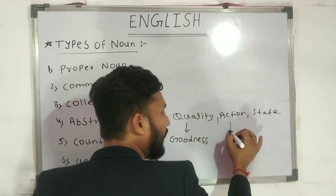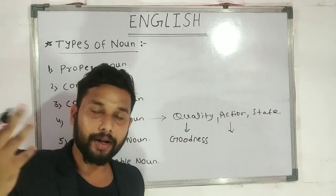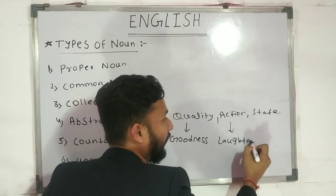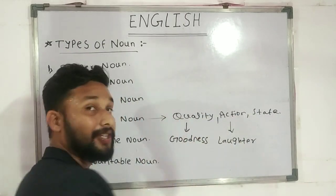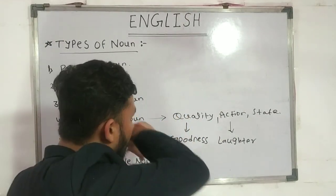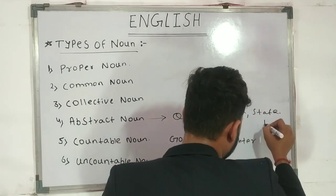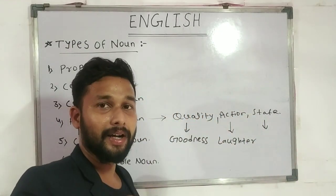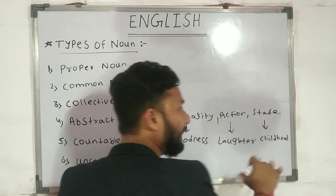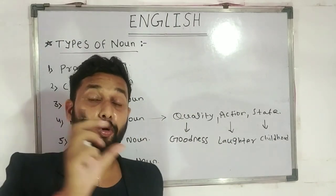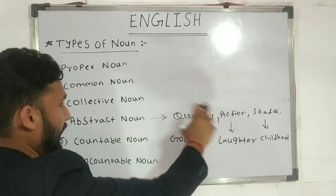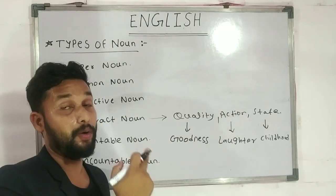We can also talk about state as an abstract noun. For example, 'childhood' — childhood is the state of being a child. So childhood is a noun that relates to a state. It is a child's state. So childhood is an abstract noun type. Abstract nouns represent quality, action, or state — things you cannot physically touch or see.